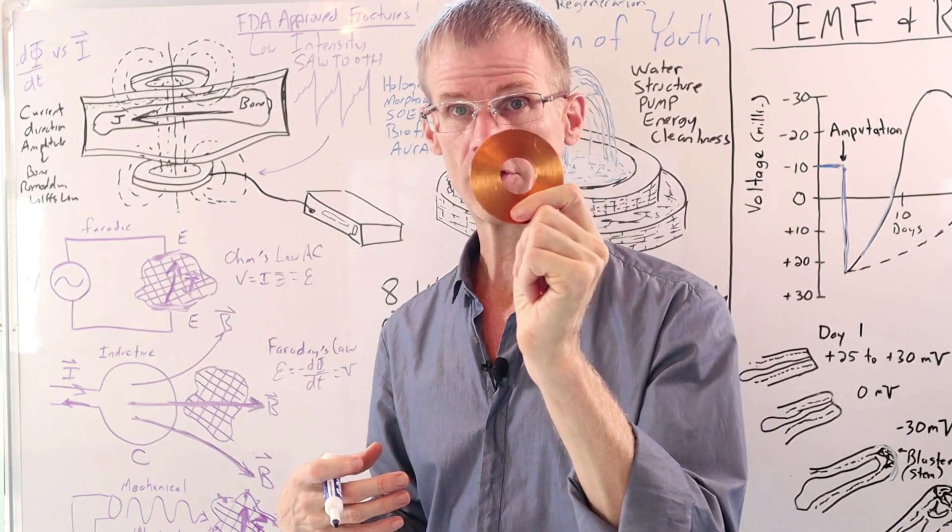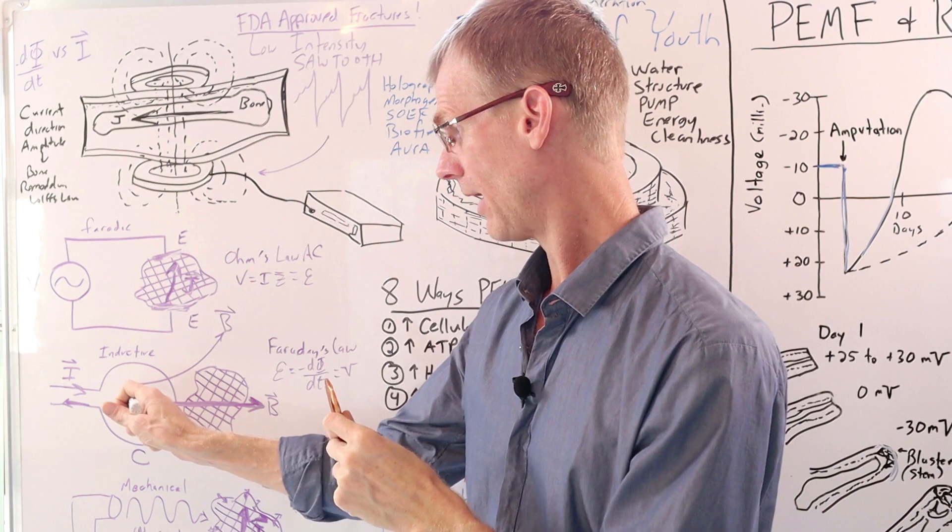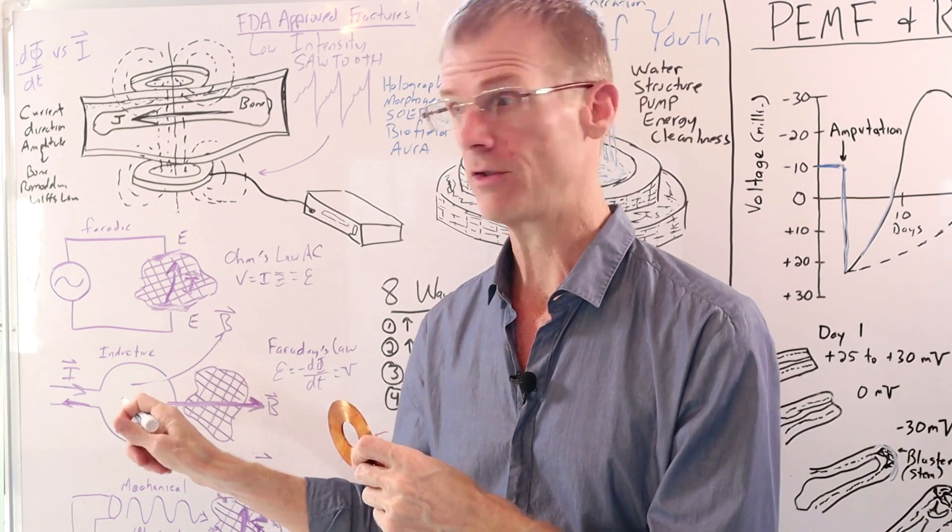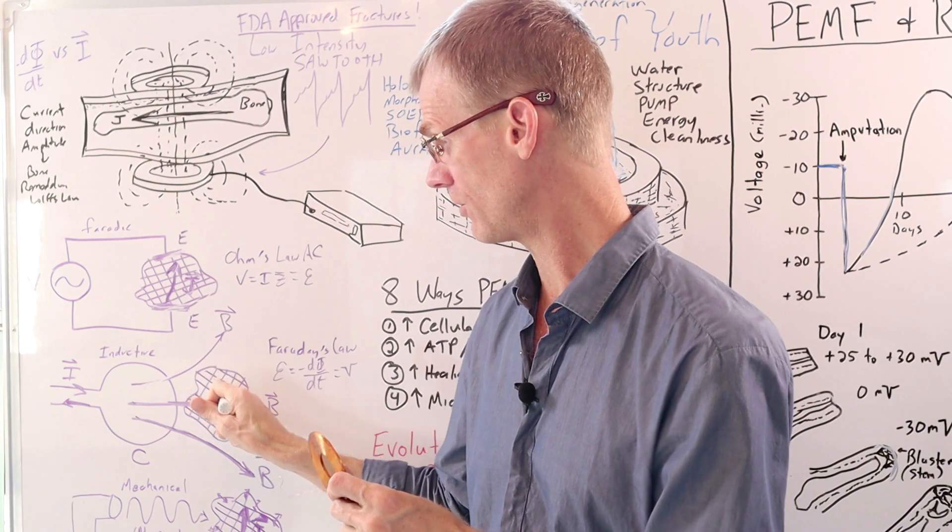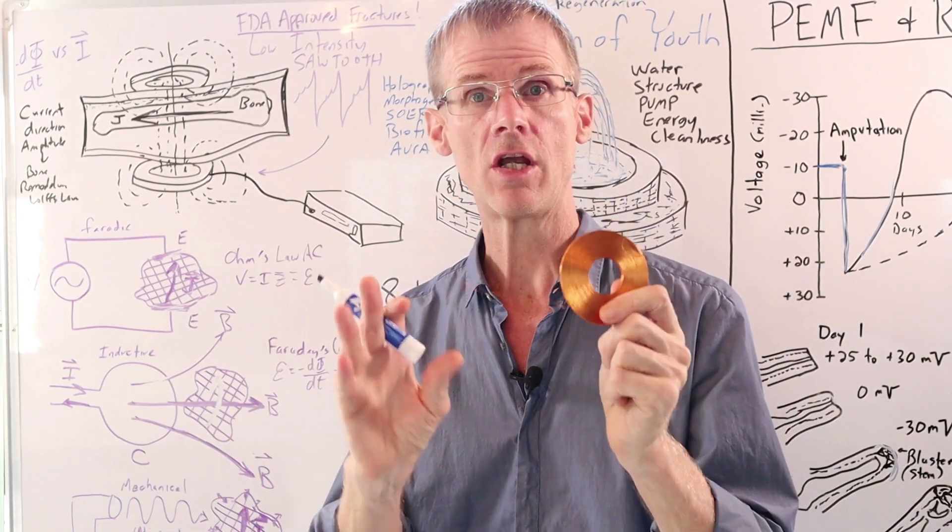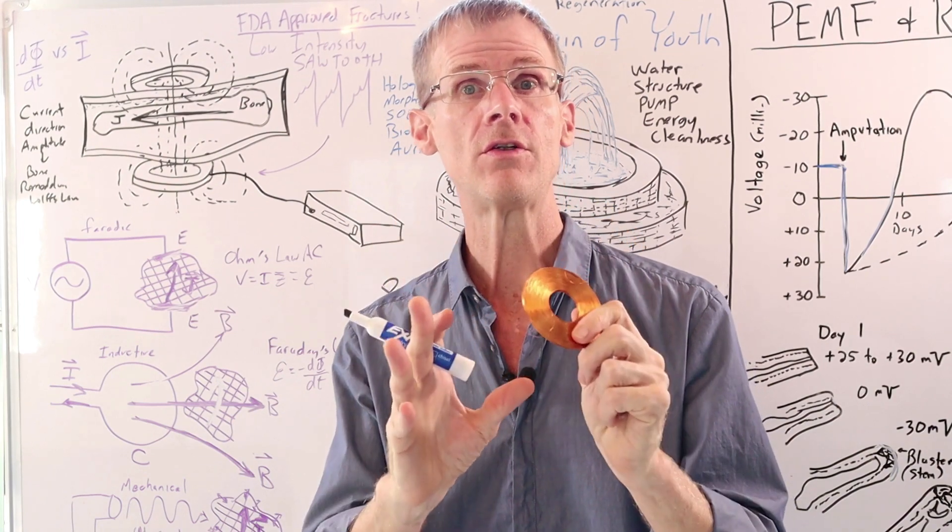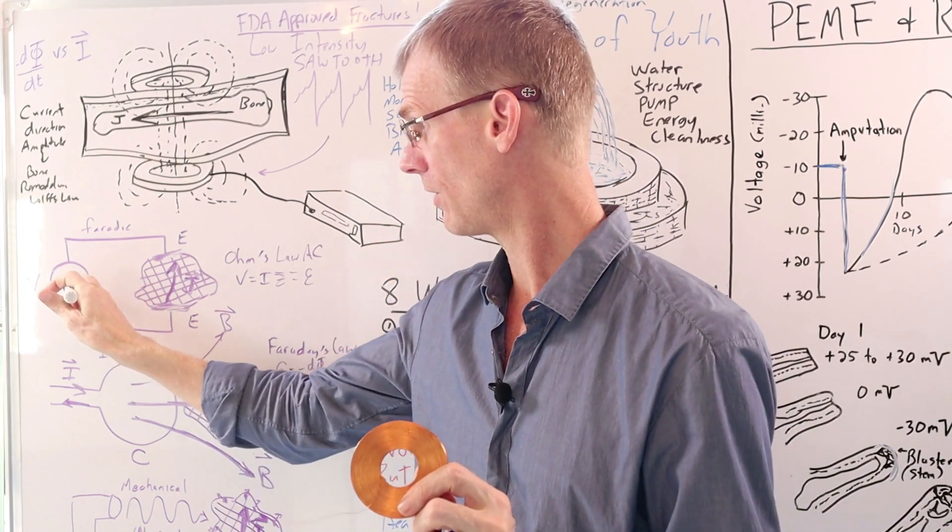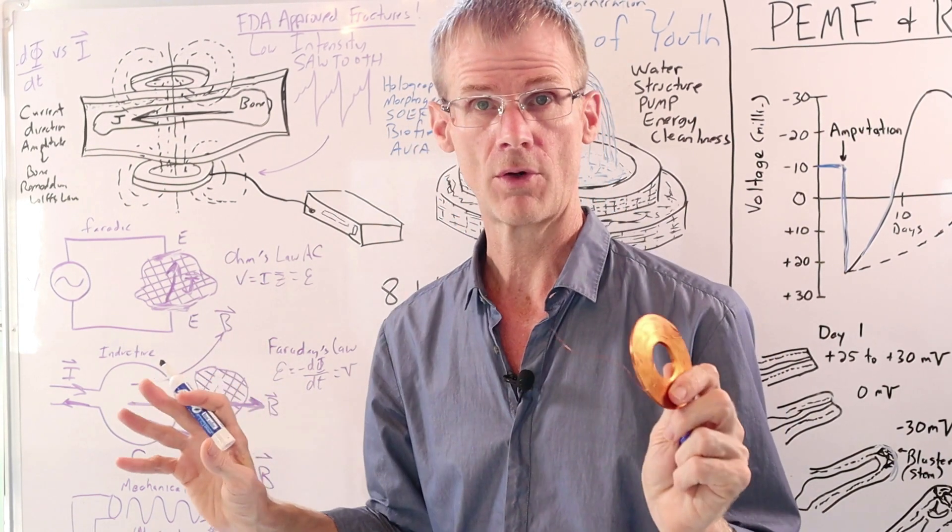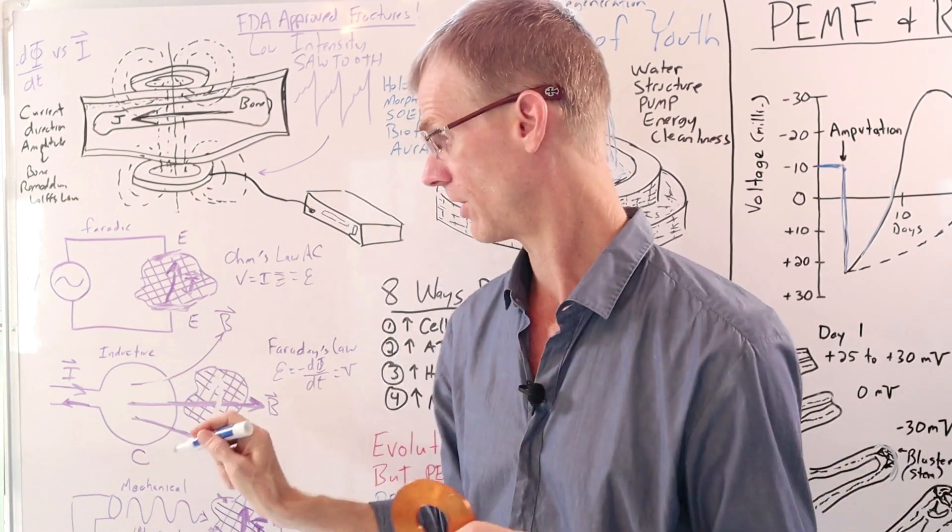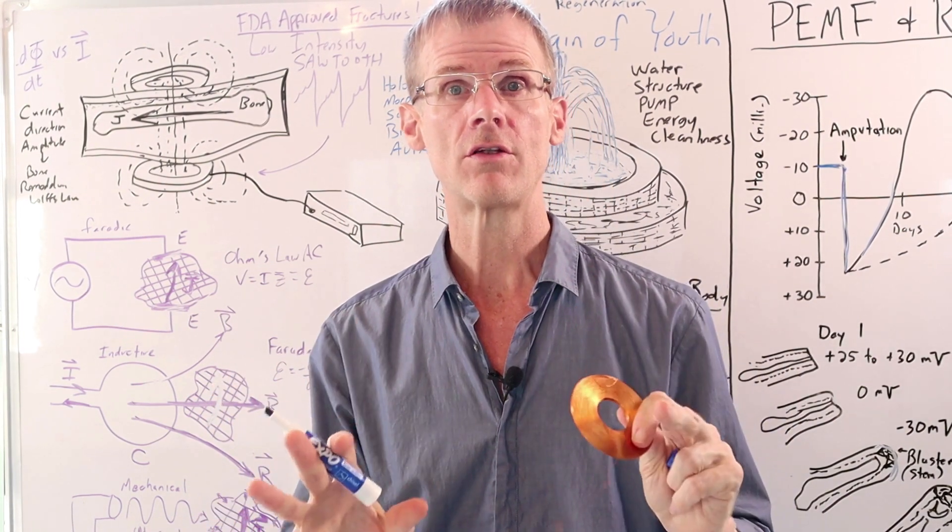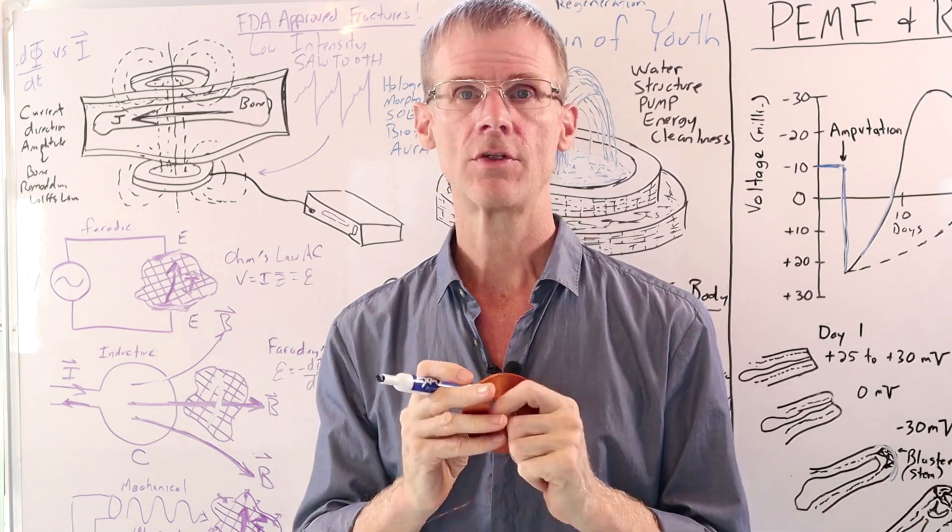But instead of using electrodes, PEMF is using a coil non-invasively, and from this coil, a changing magnetic field through Faraday's law will induce the same current in the tissue. So we can induce current with a changing magnetic field because a changing magnetic field will induce a voltage. So just like you've got a voltage supplying the current here, a changing magnetic field will induce an EMF, electromotive force, which has units of voltage, and that electromotive force will drive currents in the tissue, and those currents will stimulate healing and regeneration.